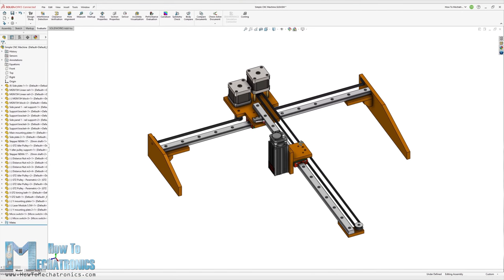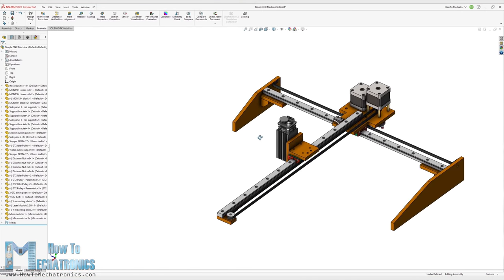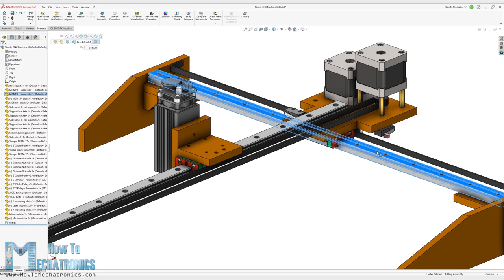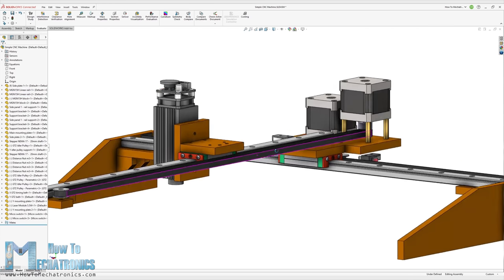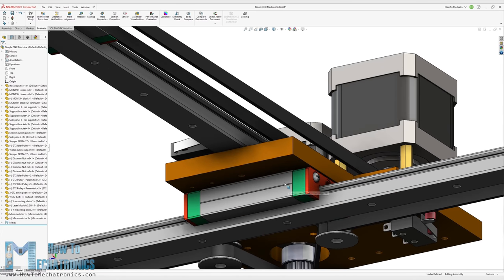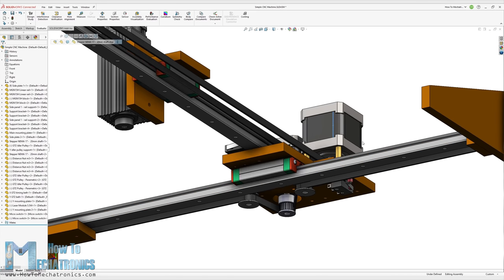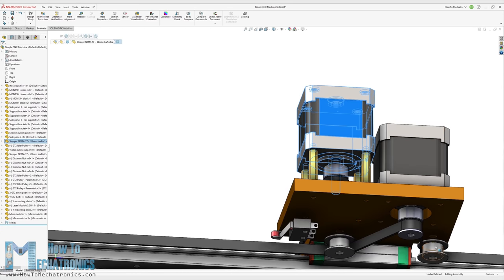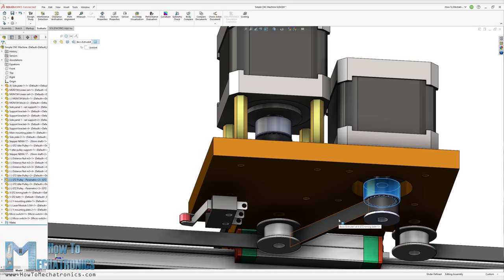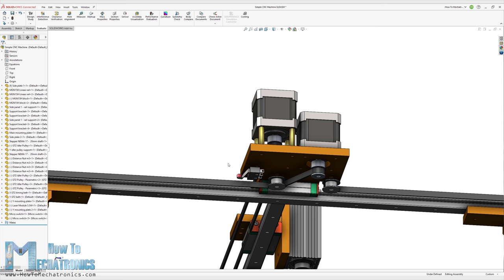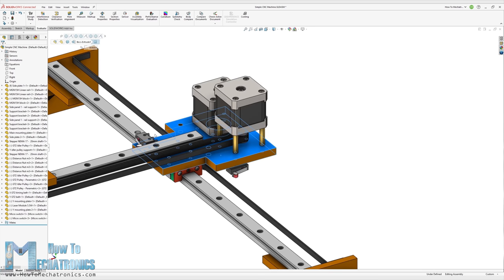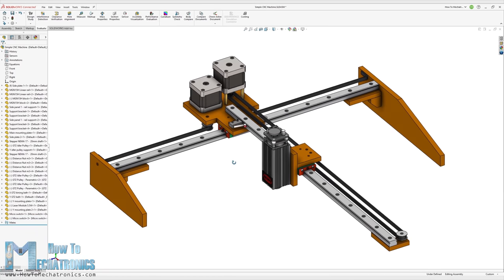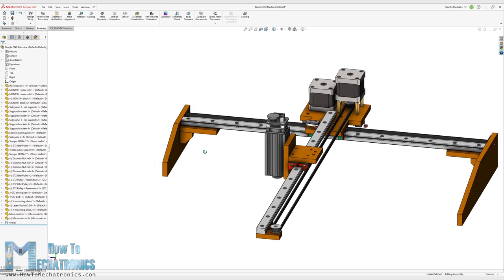I started by designing the machine using SOLIDWORKS for makers. The two main components of this CNC machine are MGN 15H linear rails together with their suitable sliding blocks. For driving the blocks or the two axes we are using two Nima 17 stepper motors and some suitable GT2 pulleys and timing belts. For connecting everything together we are using 8mm MDF board and for homing the machine two micro limit switches. And that's it, a CNC machine with minimum parts possible.